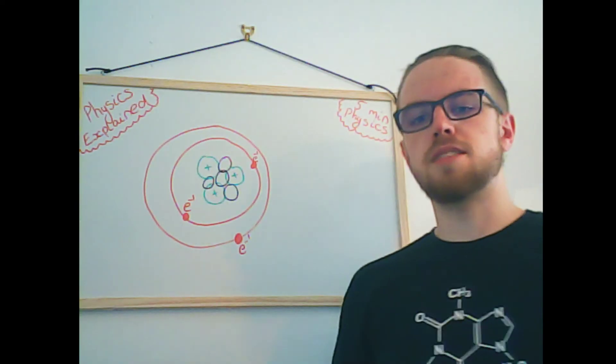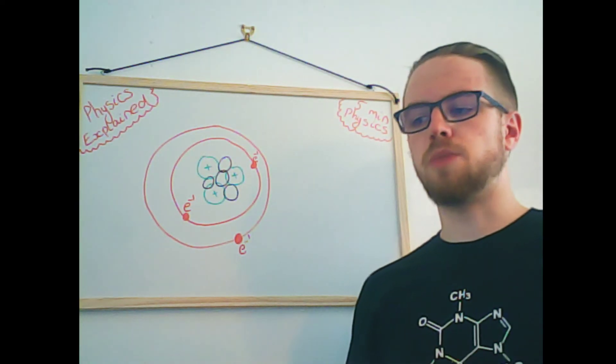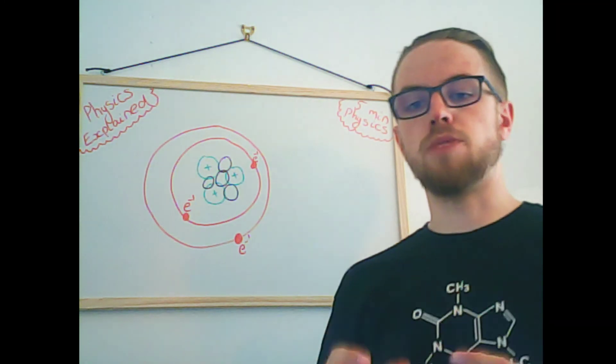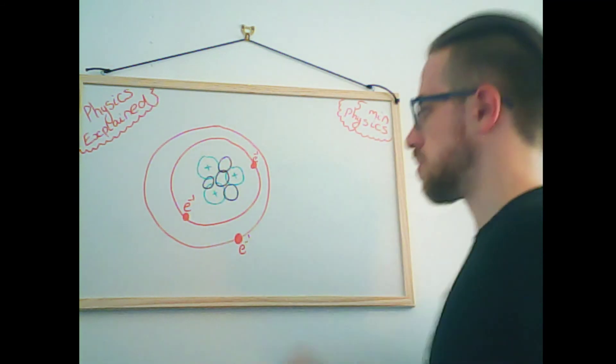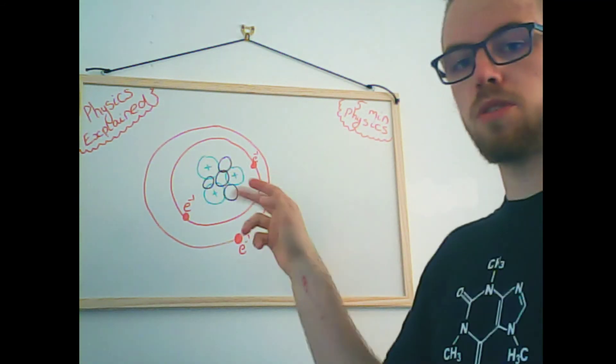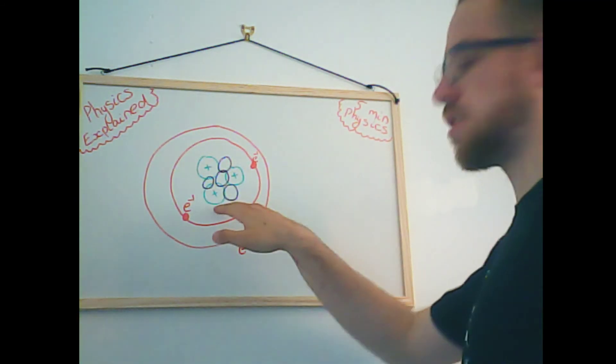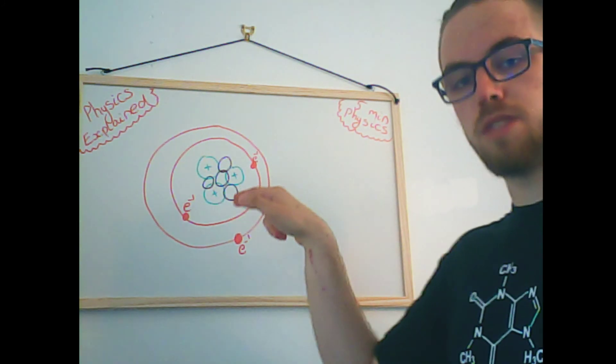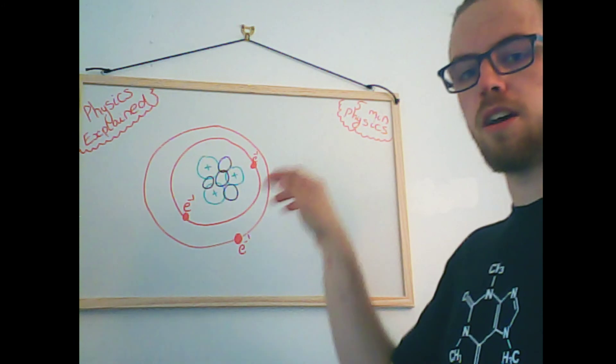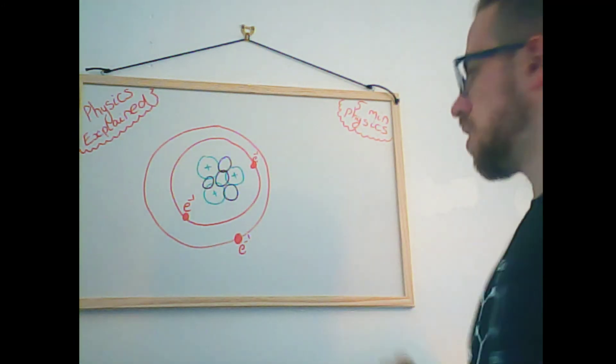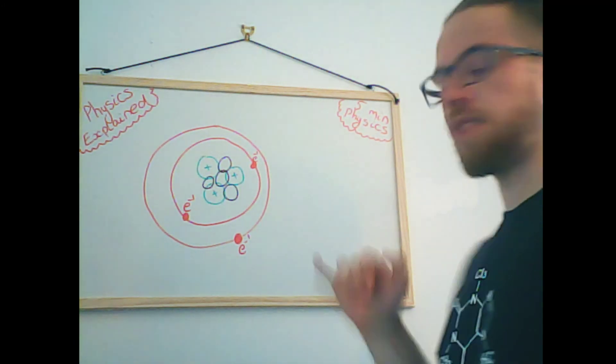So let's get started with how exactly electromagnetic waves are formed and how they are generated. On the board here we have a rough diagram of an atom. In the middle we have the nucleus with the protons and the neutrons inside there with the positive charge to the protons, neutrons have zero charge.